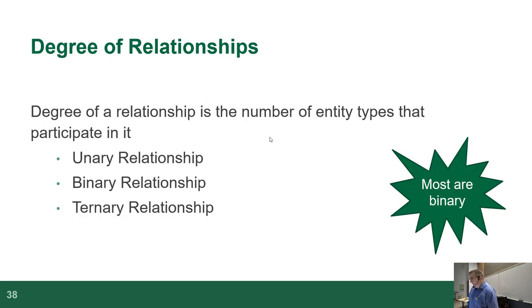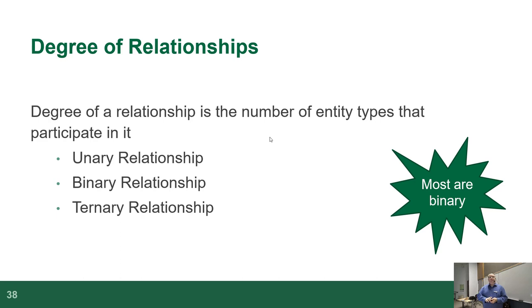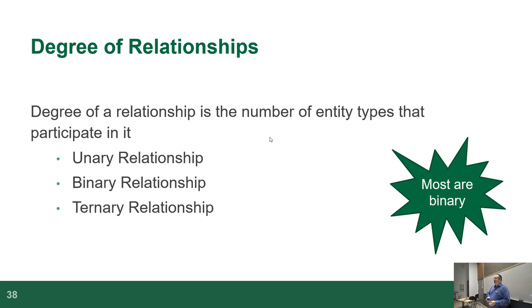There are actually more than three types — degrees of relationships. We have the unary relationship, which is a relationship where a table relates to itself — a self-referencing table. Binary relationship is the most common, where there are two participants. Ternary means there are three. At that point, the field basically stopped trying to give names to degrees of relationships, because you could have four, five, or six relationships feeding into a single entity, and it just got kind of absurd.